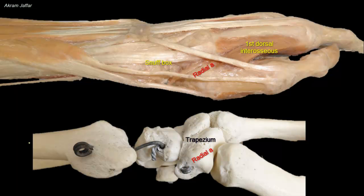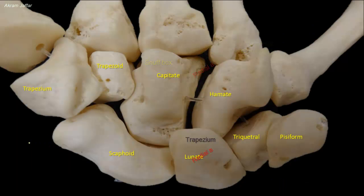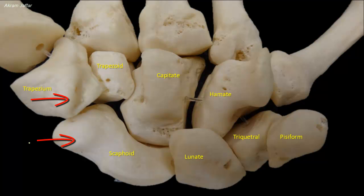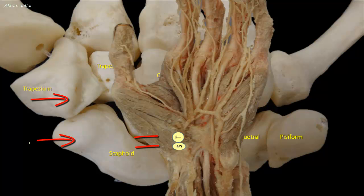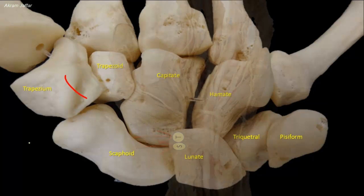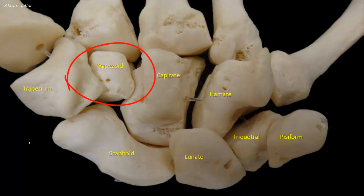The trapezium can be palpated at the base of the anatomical snuffbox. The tubercles of the scaphoid and trapezium can be palpated at the base of the medial aspect of the thenar eminence when the hand is extended at the wrist. The trapezoid is a wedge-shaped bone that resembles the trapezium.